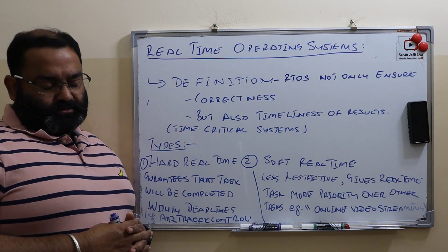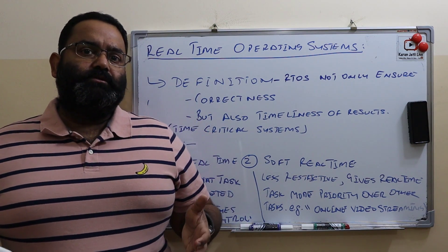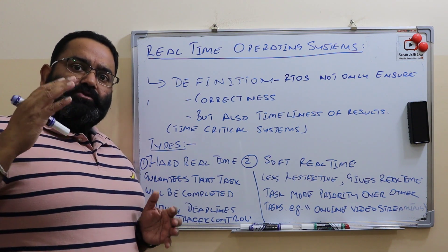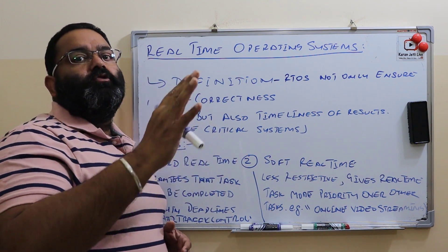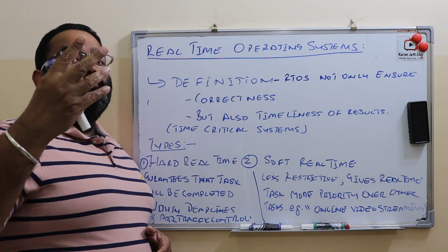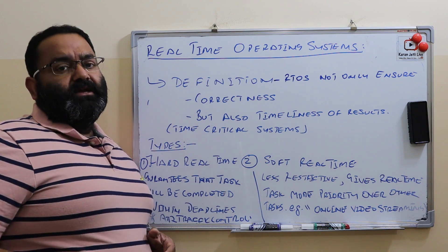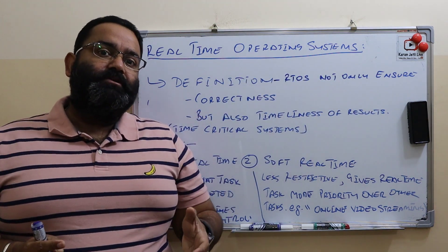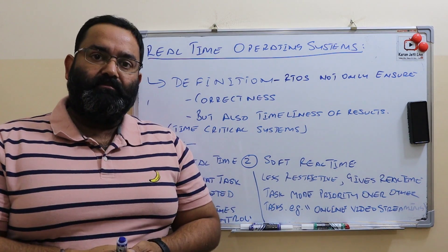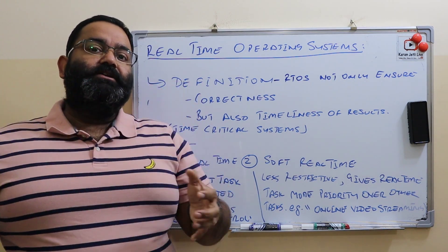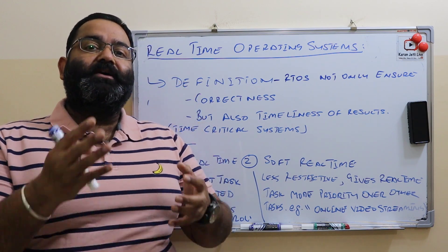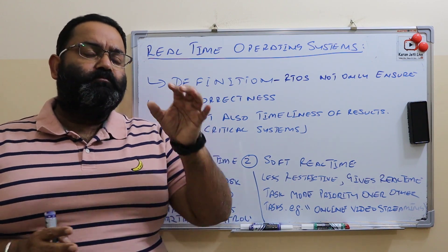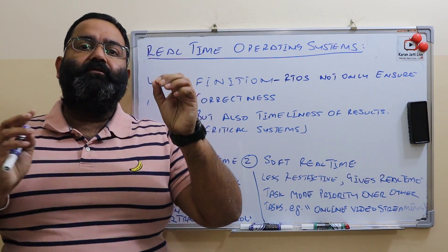Coming to the definition of real-time operating systems: real-time operating systems are the operating systems which must ensure two things. First is correctness — whenever we give some task to the operating system, it should generate the correct result. Second, and more important, it must ensure timeliness — the results should be generated in a specific period of time, meaning the deadlines must be followed. So a real-time operating system produces correct results in a specific period of time.